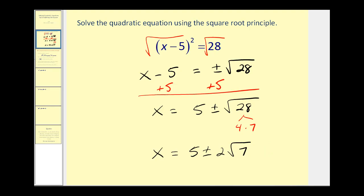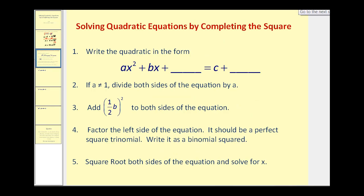The idea behind completing the square is we want to factor the left side of the equation so that it's a perfect square trinomial, meaning it has two of the same factors. But in order to do that we're going to have to take some steps to create a perfect square trinomial. Step one: write the equation in the form where we move the constant term to the right side, leaving room because we're going to be adding a special number to both sides.